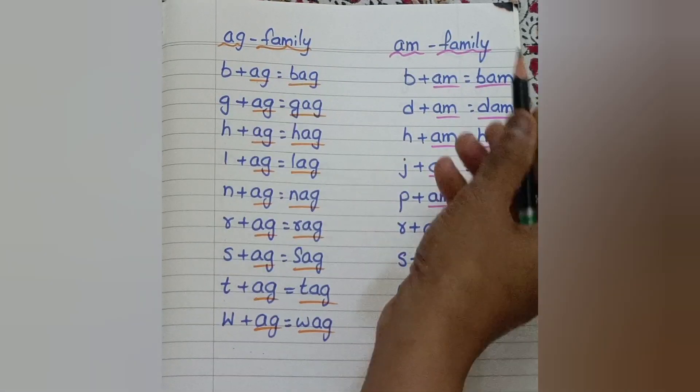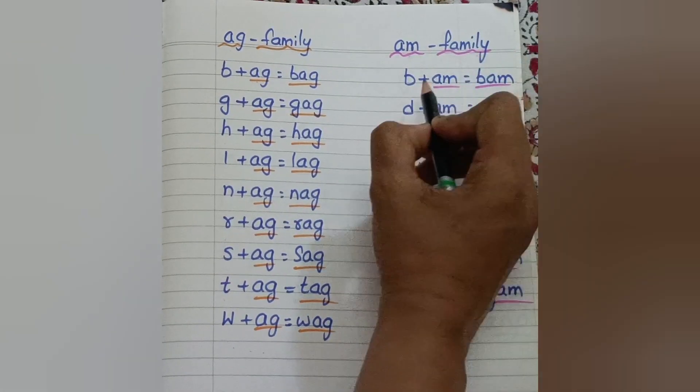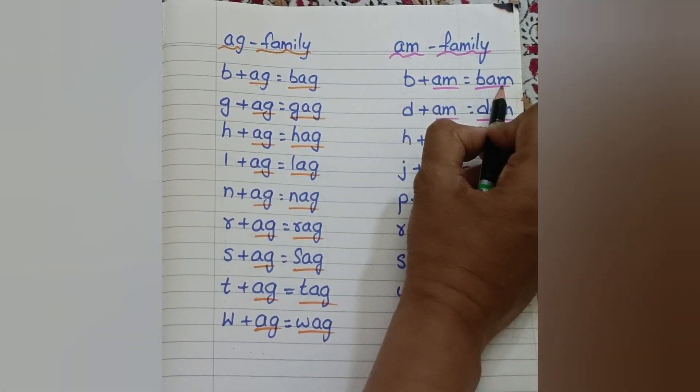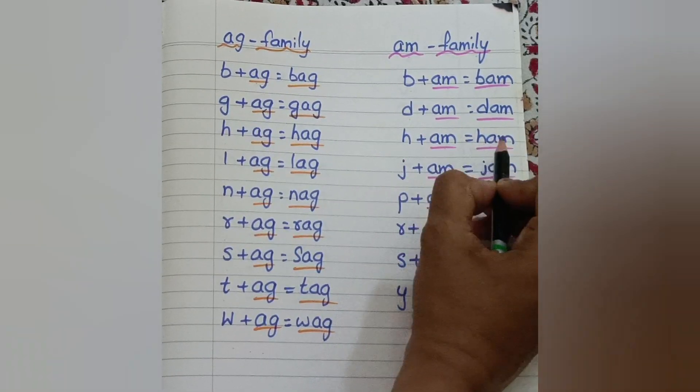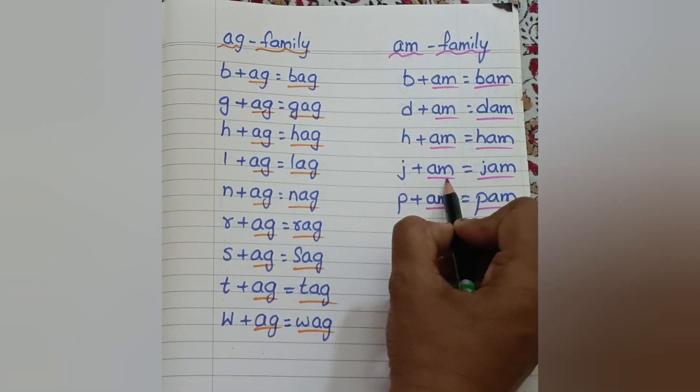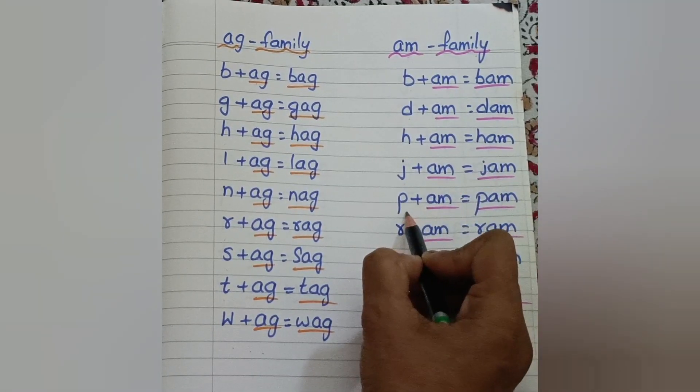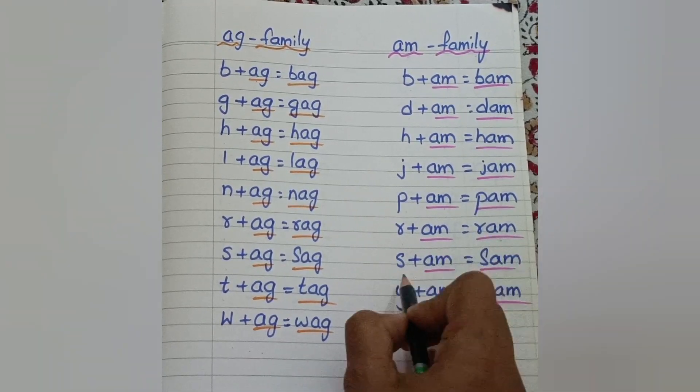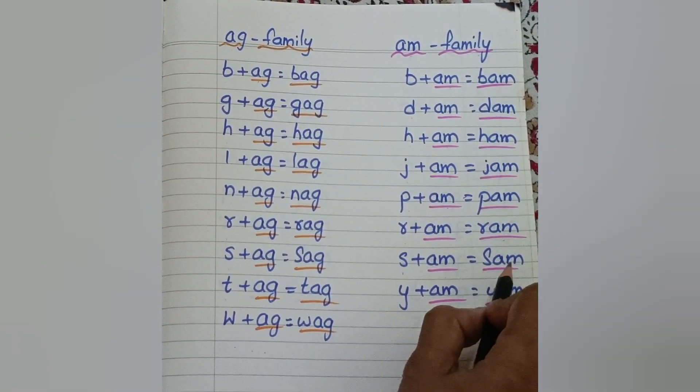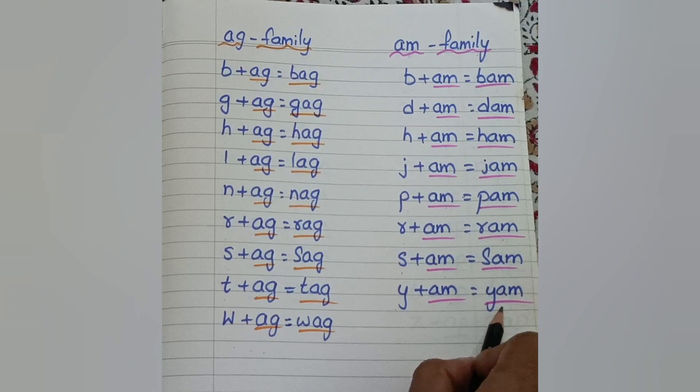Now next is Am family. B, Am: Bam. D, Am: Dam. H, Am: Ham. J, Am: Jam. P, Am: Pam. R, Am: Ram. S, Am: Sam. Y, Am: Yam.